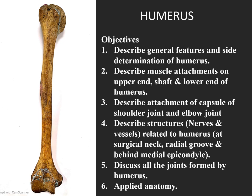Moving to the humerus. The objectives are: describe its general features and side determination; describe muscle attachments at its upper end, shaft, and lower end; know the capsular attachments over the shoulder and elbow joints; describe the neurovascular structures in relation to the humerus at the surgical neck, radial groove, and behind the medial epicondyle; and discuss the joints formed by the humerus and its applied anatomy.